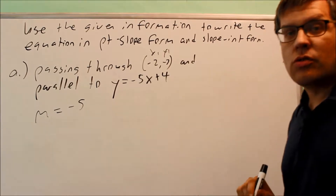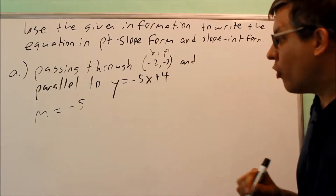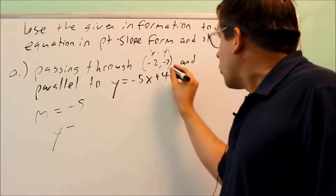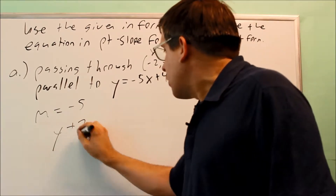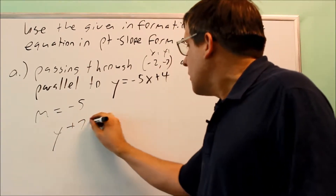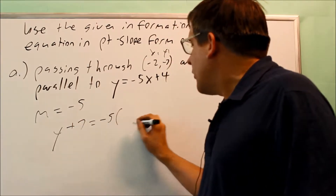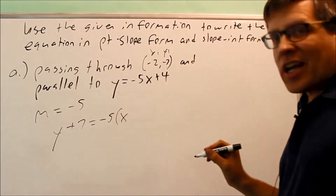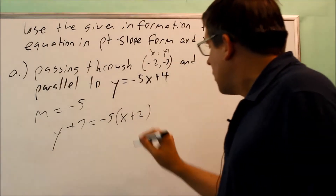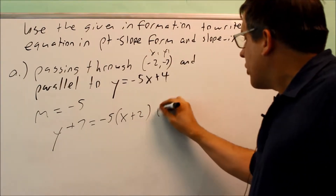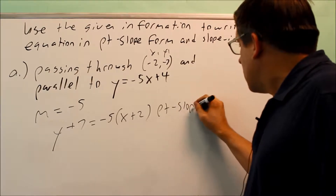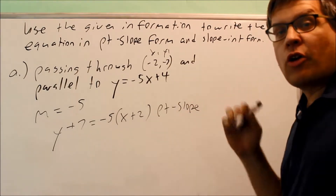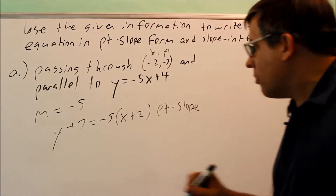Now we just put this into the point-slope formula. We have y minus y1, which is y minus a negative 7 — that becomes y plus 7. Then we have negative 5 times x minus a negative 2, which becomes x plus 2. This right here is the correct point-slope form.